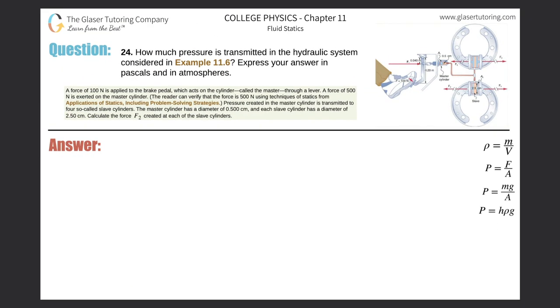Number 24: How much pressure is transmitted in the hydraulic system considered in example 11.6? Express your answer in pascals and in atmospheres. Alright, so in terms of the example that they're talking about, we have a certain force here, 500 newtons, being created at the master cylinder.